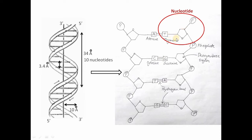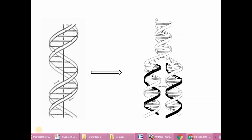One nitrogenous base, one deoxyribose sugar, and one phosphate group together is called a nucleotide. This is why DNA is called a polynucleotide — 'poly' meaning many, and 'nucleotide' meaning one nitrogenous base, one sugar unit, and one phosphate. According to Watson and Crick's second paper, DNA replication follows a semi-conservative method.